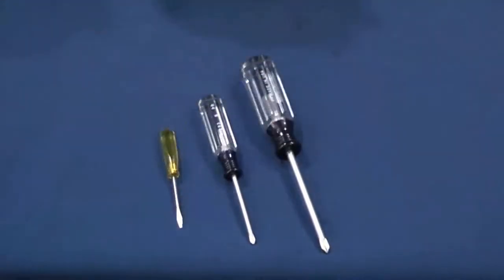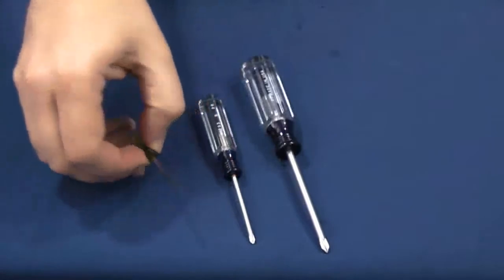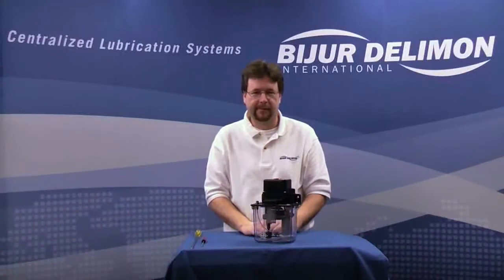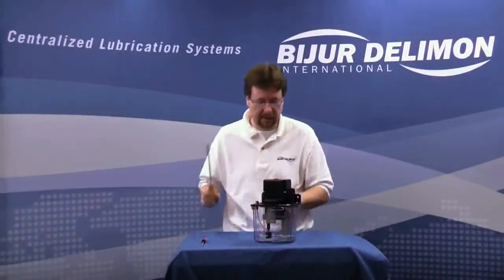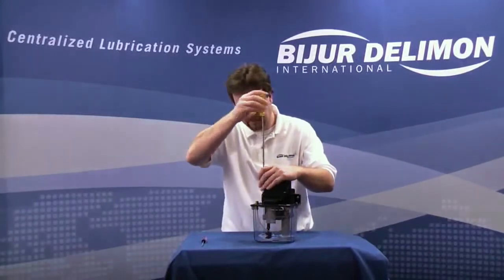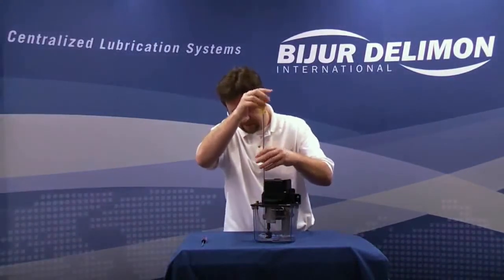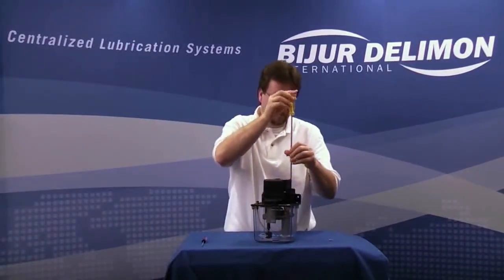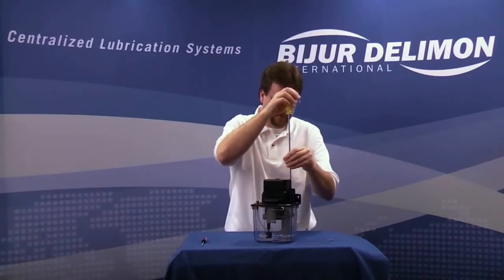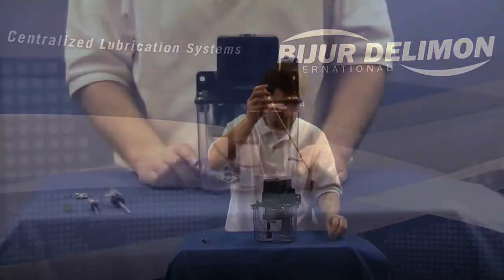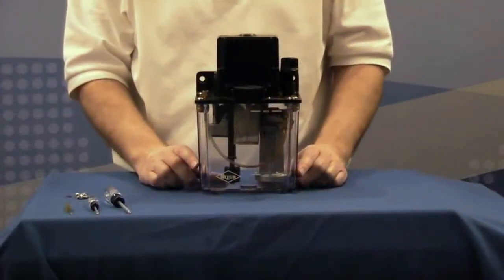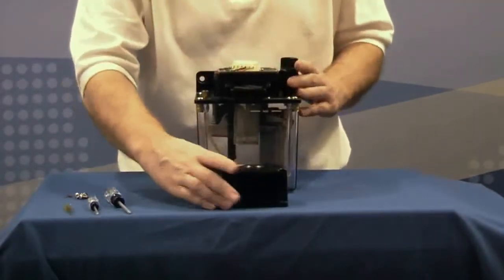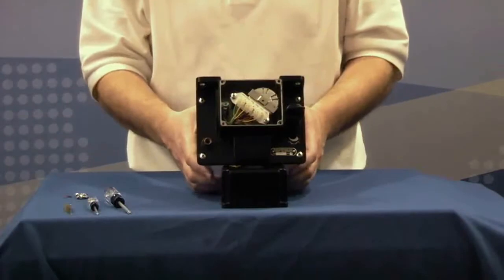You will need a couple different sizes of Phillips head screwdrivers and one small flat head screwdriver. To get to the motor compartment, you will need to remove the top four screws. Once you have removed the four screws in the motor cover, take off the cover, set it aside. That will expose the inside.